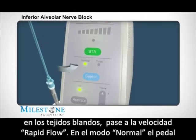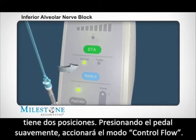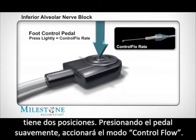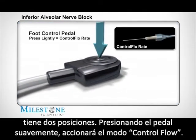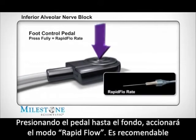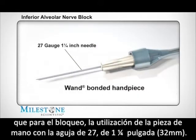In the normal mode, the foot control has two distinct positions. Depressing the foot control lightly allows you to enter the control flow rate. Fully depressing the foot control allows you to enter into the rapid flow rate. It's recommended that you use a 27 gauge, one and a quarter inch needle to perform the inferior alveolar nerve block.